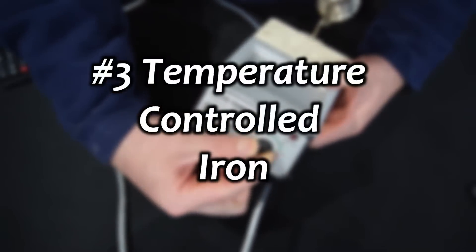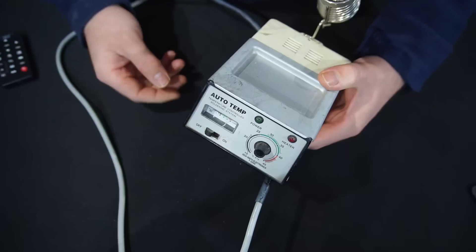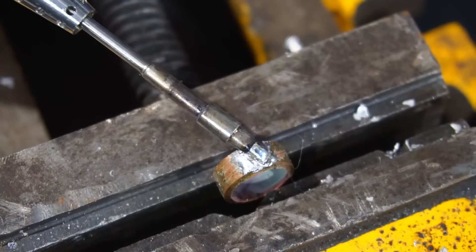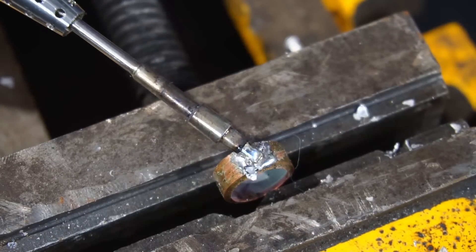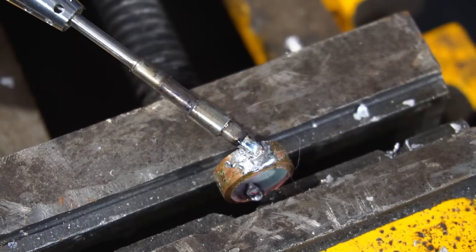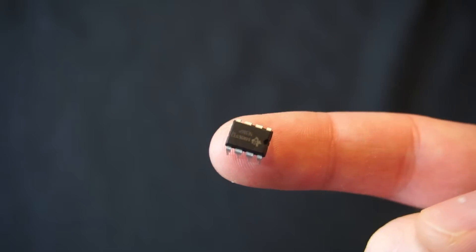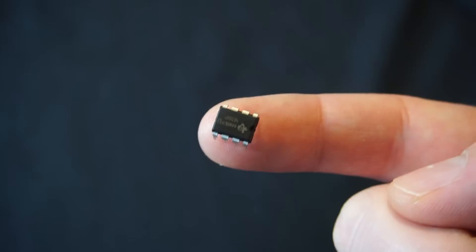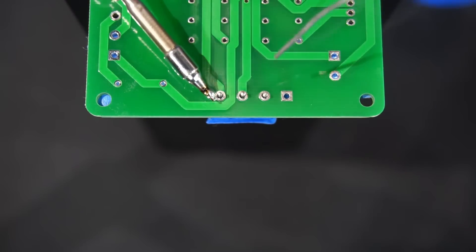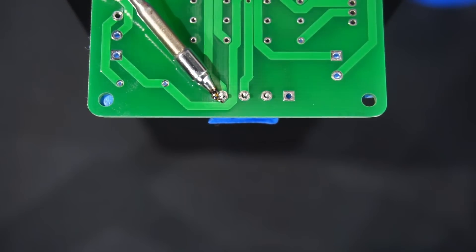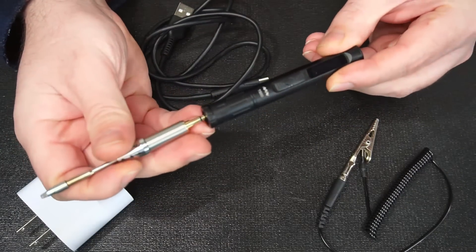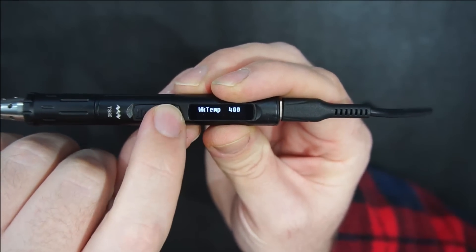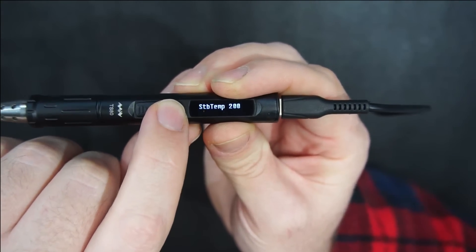Temperature controlled iron. It might sound like a luxury, but I'd argue it's a necessity. Depending on the type of solder you are using, each type of solder has an ideal working temperature. Too cold and the solder won't flow properly, and on the flip side when dealing with temperature sensitive components such as ICs, then getting the solder excessively hot could damage components. If you don't own a temperature controlled soldering iron, then check out my review video on the TS-80 soldering iron. It's packed full of features at a great price.